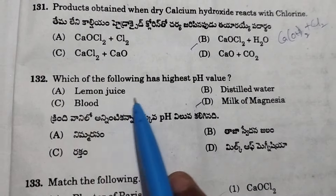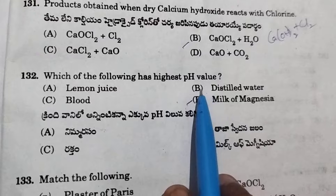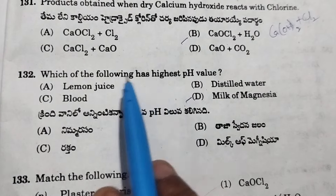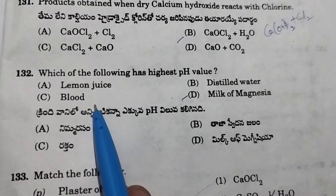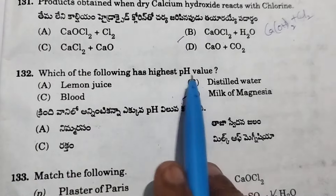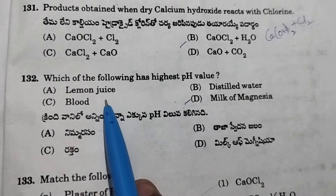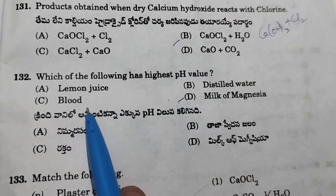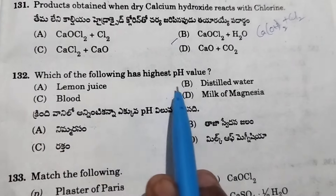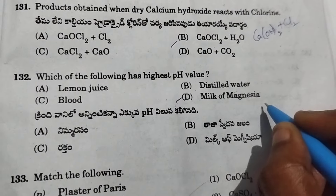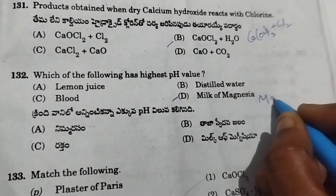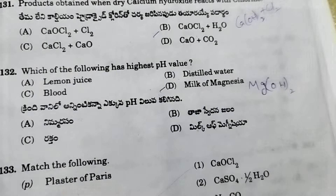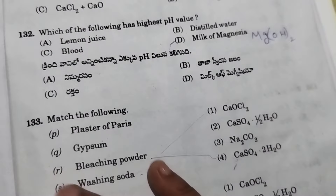Which of the following has the highest pH value? pH below 7 is acidic; above 7 is basic. Lemon juice is acidic. Distilled water is neutral (pH 7). Blood is slightly basic. Milk of magnesia (magnesium hydroxide) is a strong base, so it has the highest pH value.